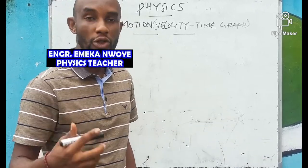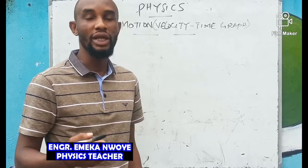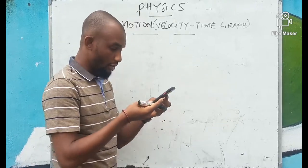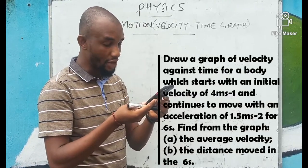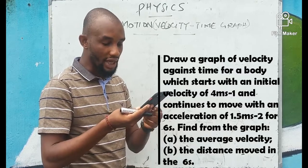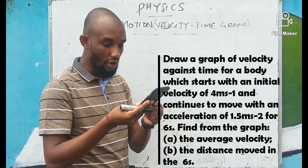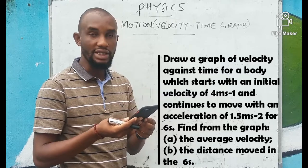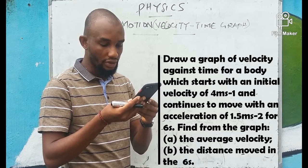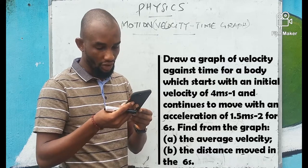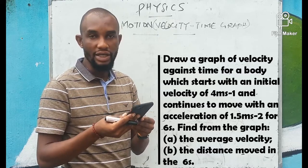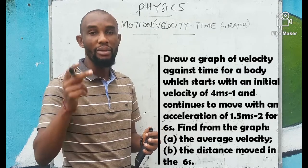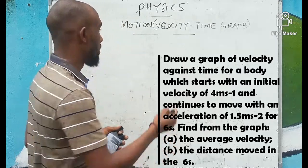I'm going to proceed with more questions — calculations regarding velocity-time graphs in motion. The problem: draw a graph of velocity against time for a body which starts with an initial velocity of 4 meters per second and continues to move with an acceleration of 1.5 meters per second squared for 6 seconds. From the graph, determine the average velocity and the distance moved in the 6 seconds. We'll start by making a sketch of the velocity-time graph.